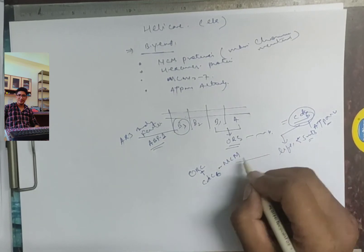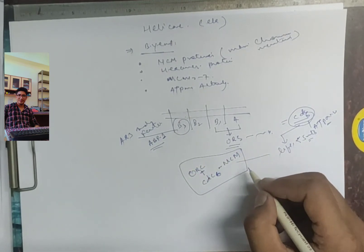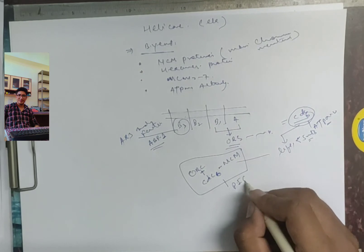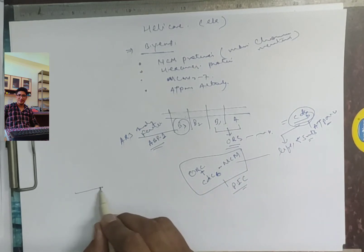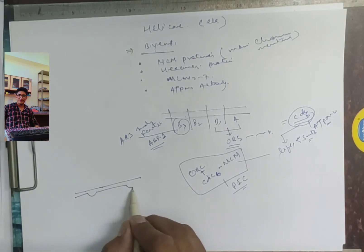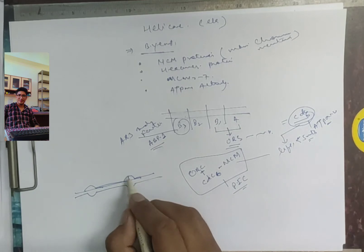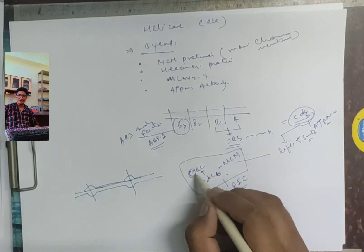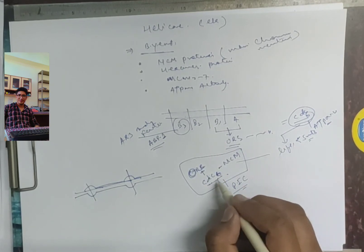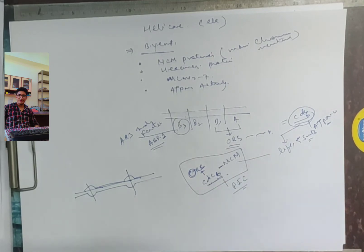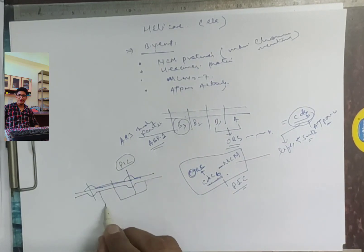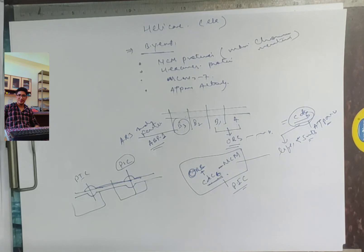The MCM complex forms at the origin recognition sequence together with CDC6 — this is a very important protein. When these complexes assemble, the formation of the pre-replicating complex or pre-initiation complex occurs. There are approximately 400 origins of replication, so multiple replicons start replication.